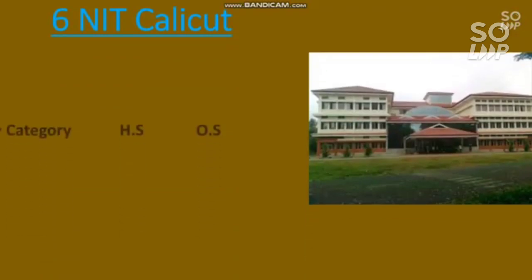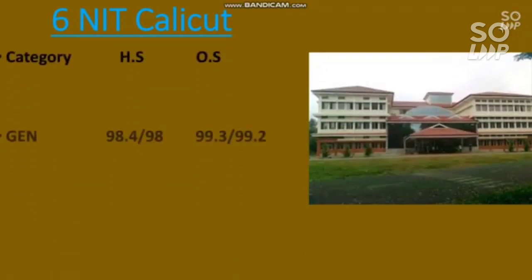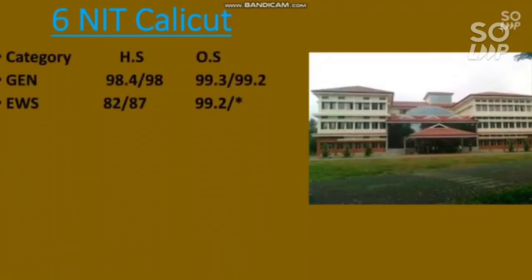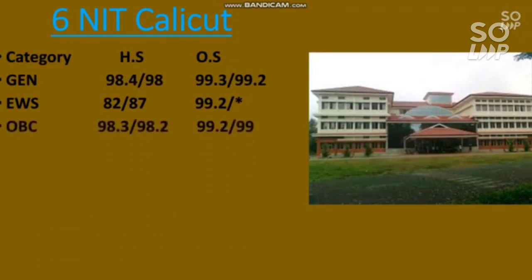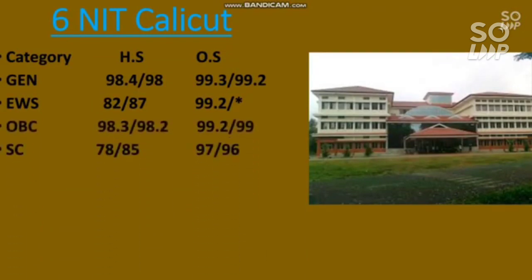Number six is NIT Calicut. EC cutoffs: General 99.3, EWS 99.2, OBC 99.2, SC 97, and ST 96 percentile required.